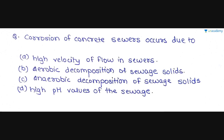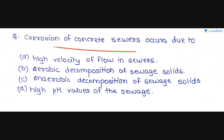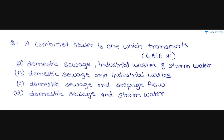Next question: corrosion of concrete sewers occurs due to — option A is high velocity of flow in sewers, option B is aerobic decomposition of sewage solids, option C is anaerobic decomposition of sewage solids, and option D is high pH values of the sewage. Corrosion of concrete sewers generally occurs due to anaerobic decomposition of sewage solids. Option C is the correct answer.